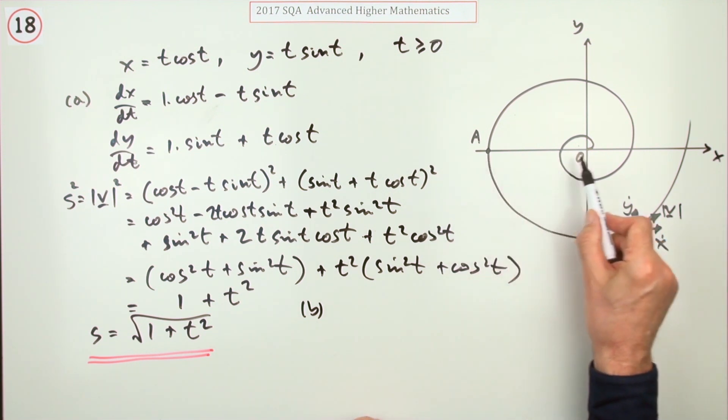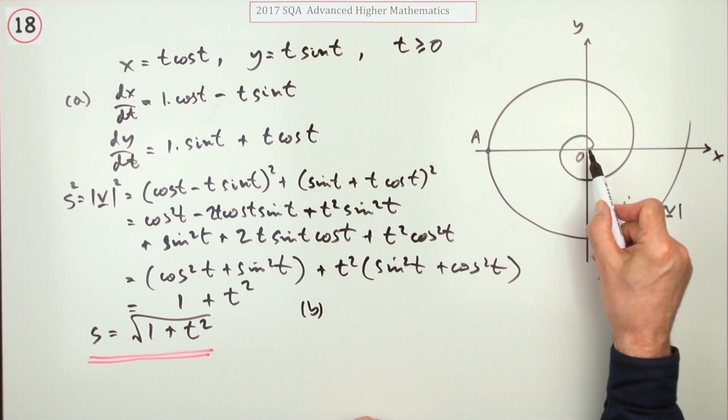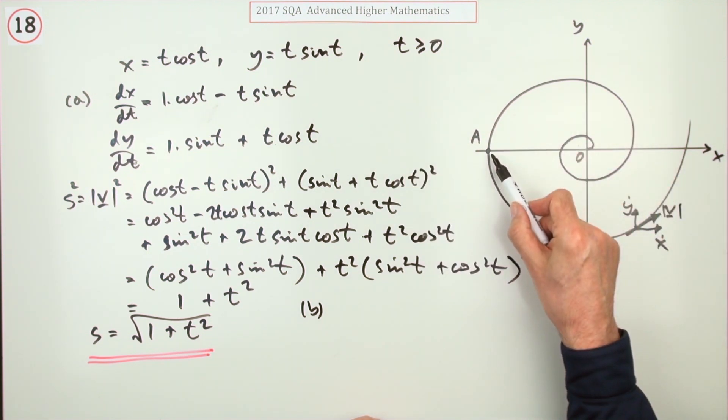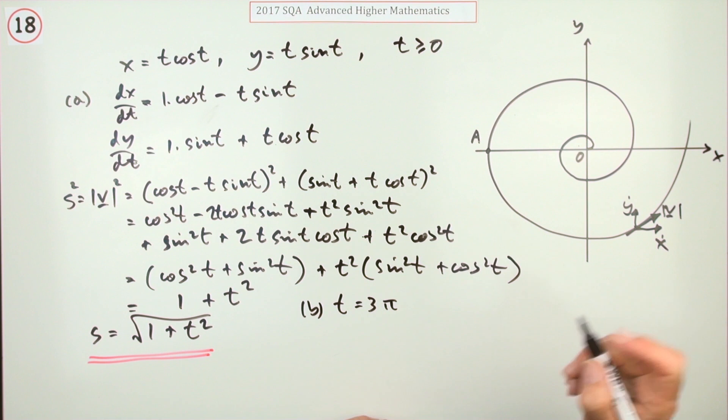Well, you just need to know what t is there. There's two ways you could find that. You can either say, well, how many times has it gone around? I know what t is—t is just this angle in radians. It's going around one and a half times, so that means t should be one and a half turns, which is 3π.